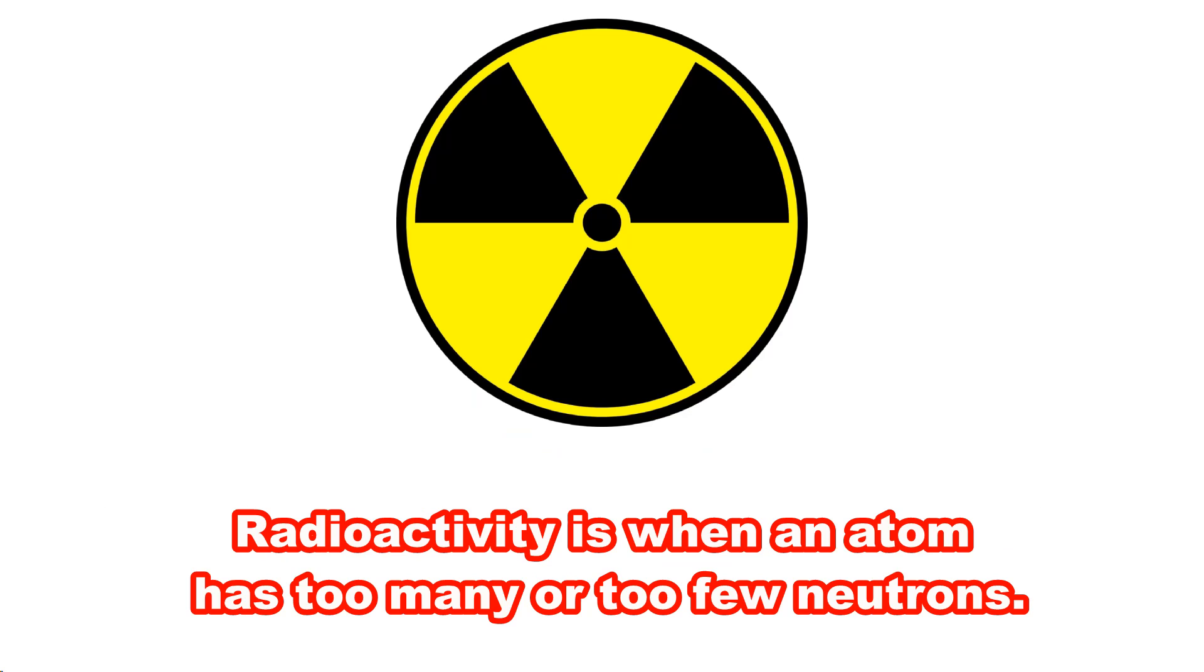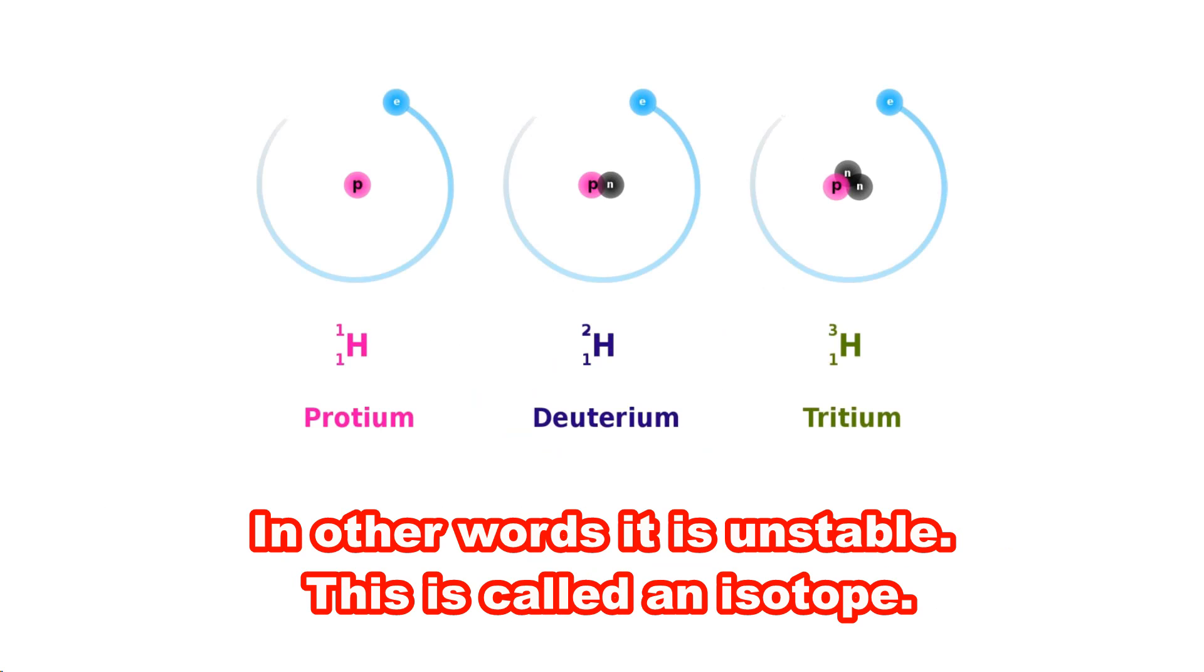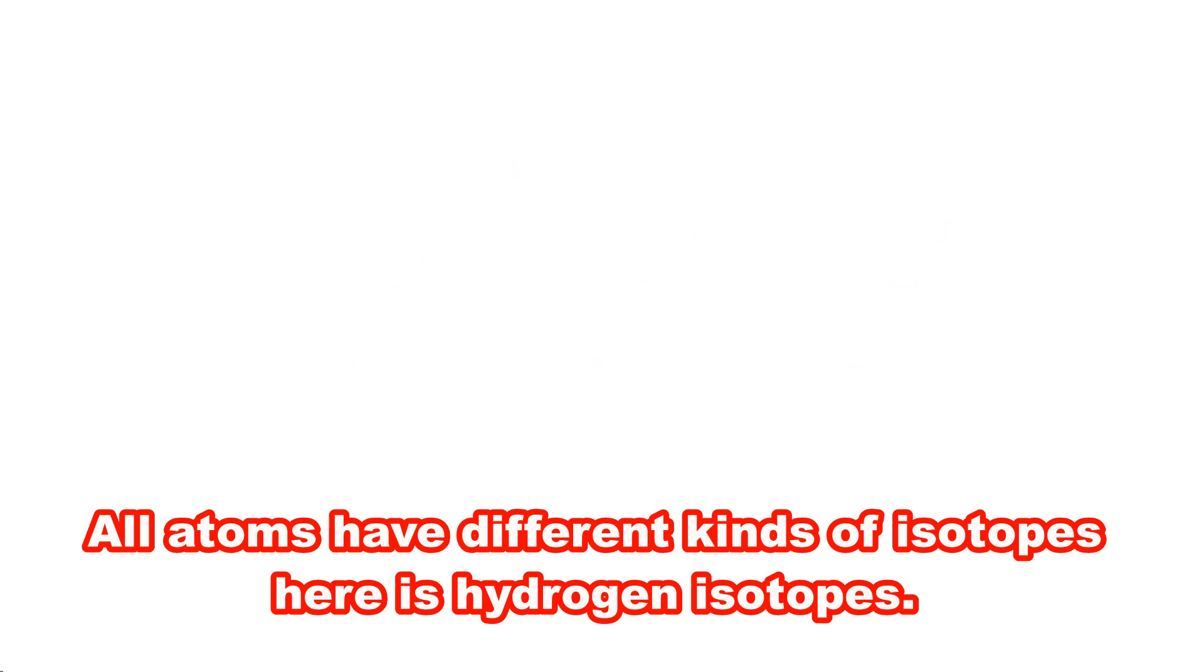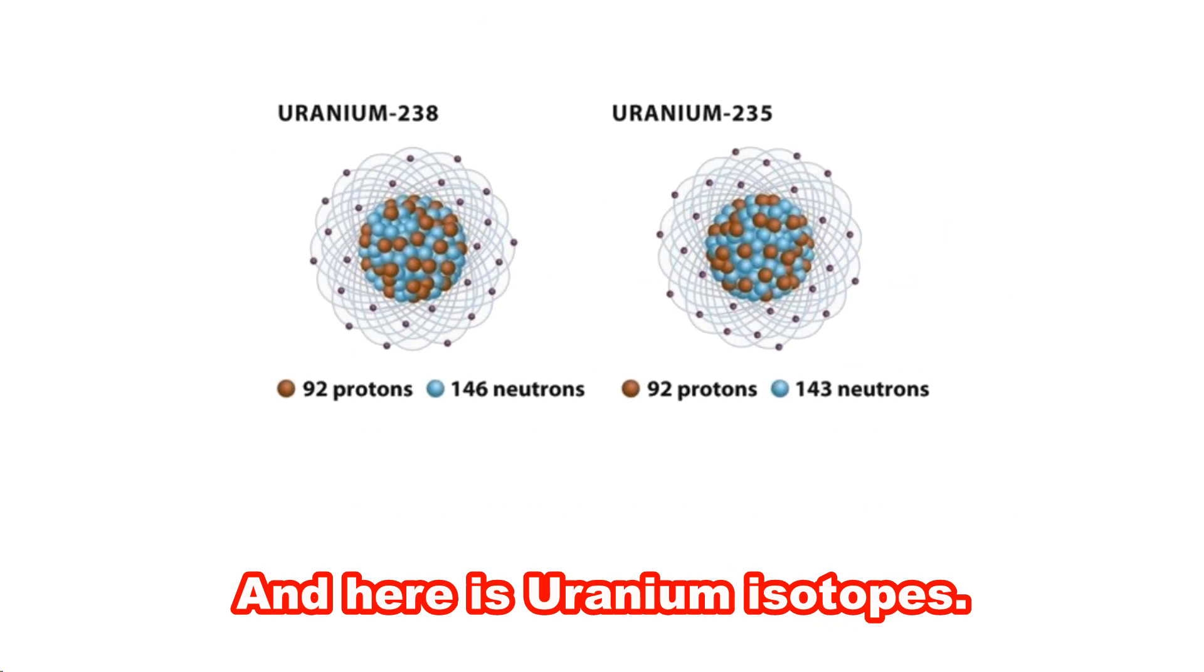Radioactivity is when an atom has too many or too few neutrons. In other words it is unstable. This is called an isotope. All atoms have different kinds of isotopes - here are hydrogen isotopes and here are uranium isotopes.